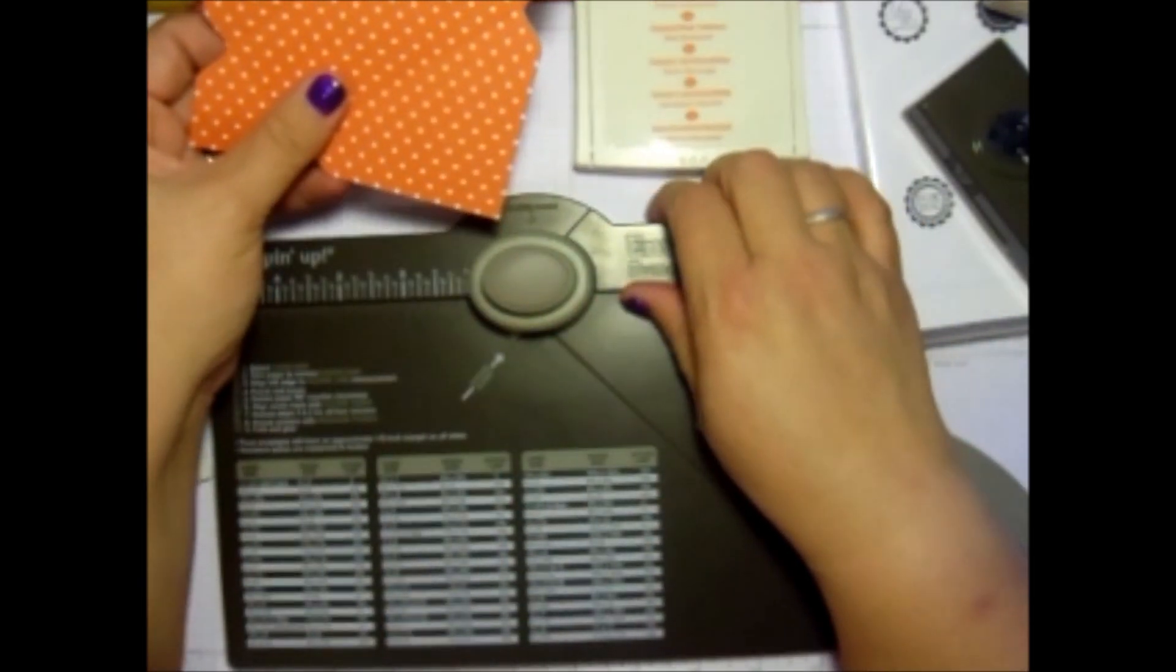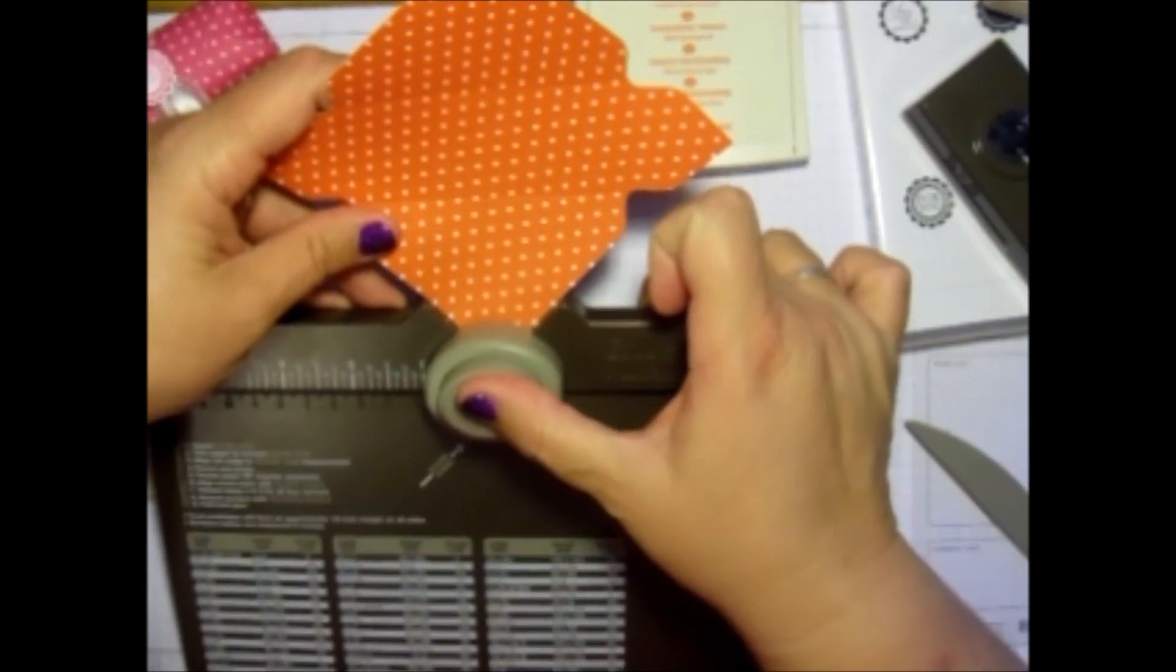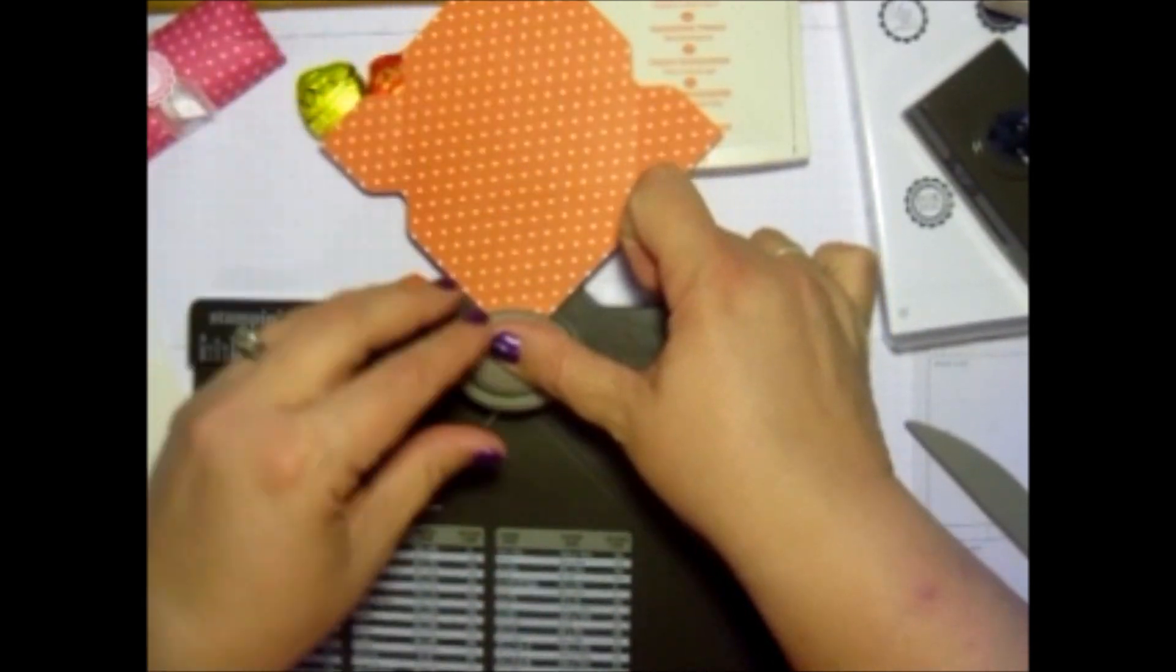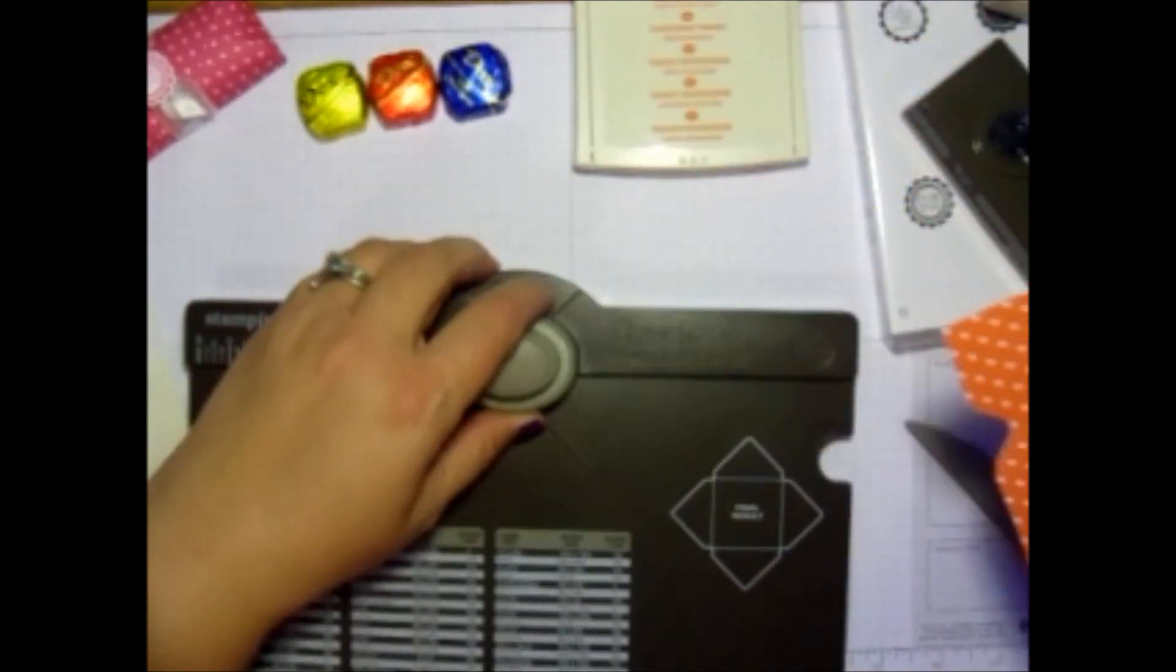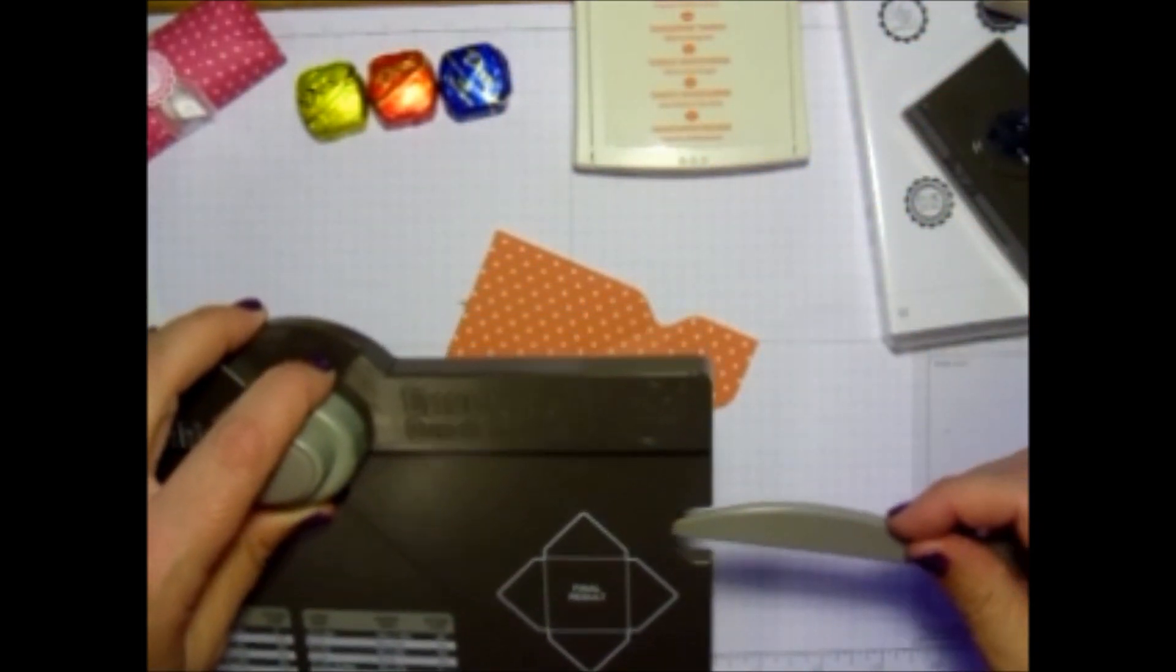And you're going to take your corner and round off that corner. Right? Then that's it for the envelope punch board. You're all done there.